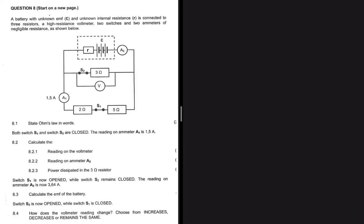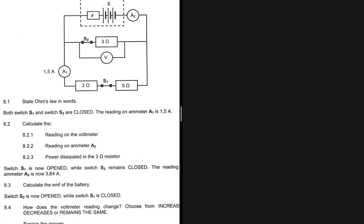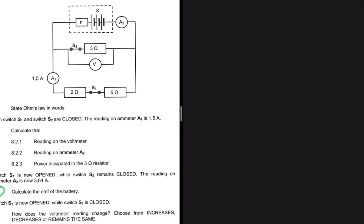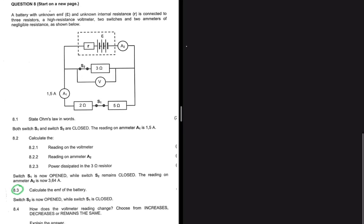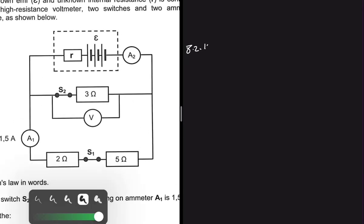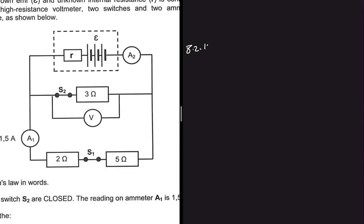Have you ever calculated the EMF using simultaneous equations? That's what we're going to do for this question. Looking at 8.3, we have to calculate the EMF but we don't have the internal resistance. But before we do that, let's do 8.2. For 8.2.1, we're looking for the reading on the voltmeter, which is connected across this 3Ω resistor, as you can clearly see.